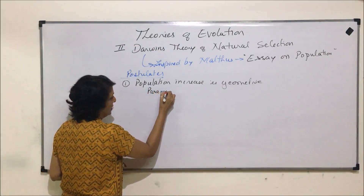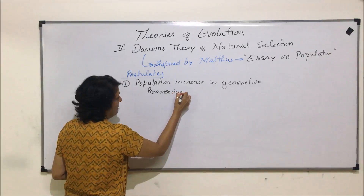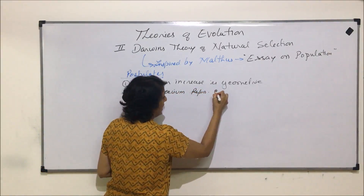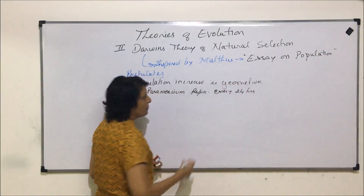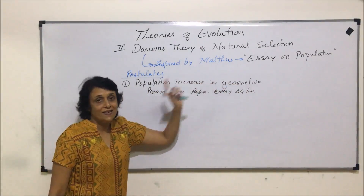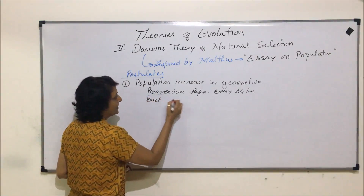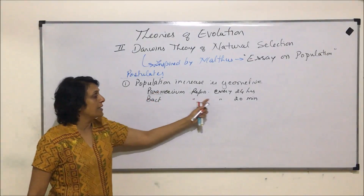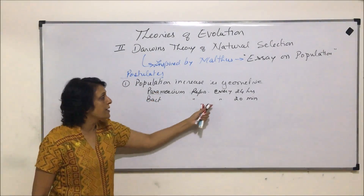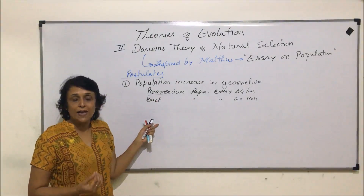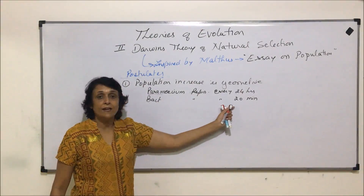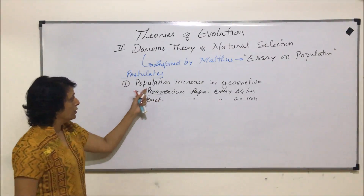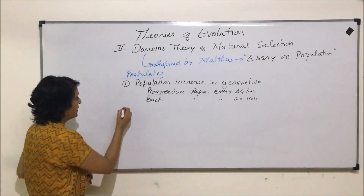Paramecium reproduces every 24 hours. That means if the conditions are optimum, they will reproduce at this rate. Similarly, bacteria reproduce every 20 minutes, again if conditions are optimal. If they reproduce at such a rate, within a few months or years their numbers would get into millions. Within two to five years the entire earth would be covered with only paramecia or only bacteria. So the point is that population increase is always geometric.